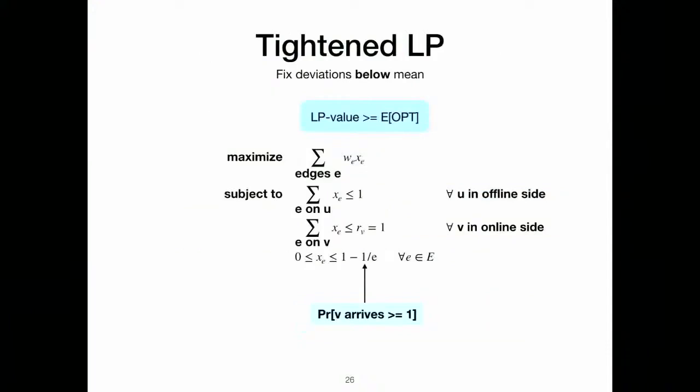What is this tightened linear program? The probability that a vertex never arrives is about 1/e, so the probability it arrives at least once is about 1 - 1/e. This means the probability that an edge can be matched is at most 1 - 1/e. We simply add that as a constraint — everything else remains the same: the matching constraint, the constraint on the right-hand side, plus this one extra constraint ensuring we don't overestimate probabilities. In principle you could add many more such constraints — for instance for every pair of edges — but to keep it simple we add just one. To get the full 0.705 you actually need one additional constraint beyond this.